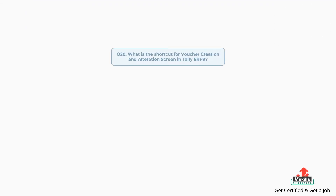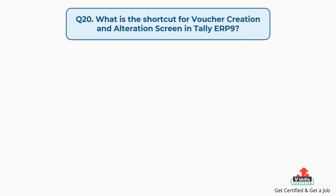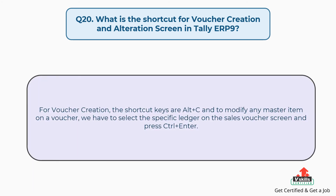Question number twenty: what is the shortcut for the voucher creation and alteration screen in Tally ERP9? For voucher creation, the shortcut key is ALT plus C. To modify any master item on a voucher, select the specific ledger on the sales voucher screen and press CTRL plus ENTER.